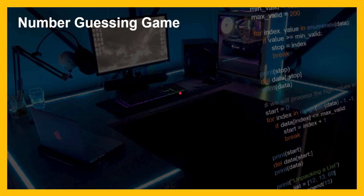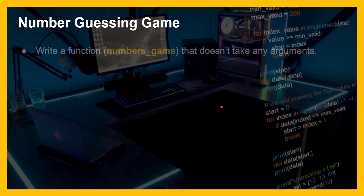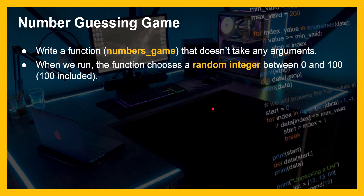This is going to be the numbers guessing game. I'm going to give you the outline of this guessing game, and then you are going to try your best to do it on your own, and then I will do it afterwards. This is a great way for you to test the waters before I even start. First of all, you need to write a function called numbers_game that doesn't take any arguments. Next, when we run the function, the function chooses a random integer between 0 and 100. 100 should be included — something to keep in mind.